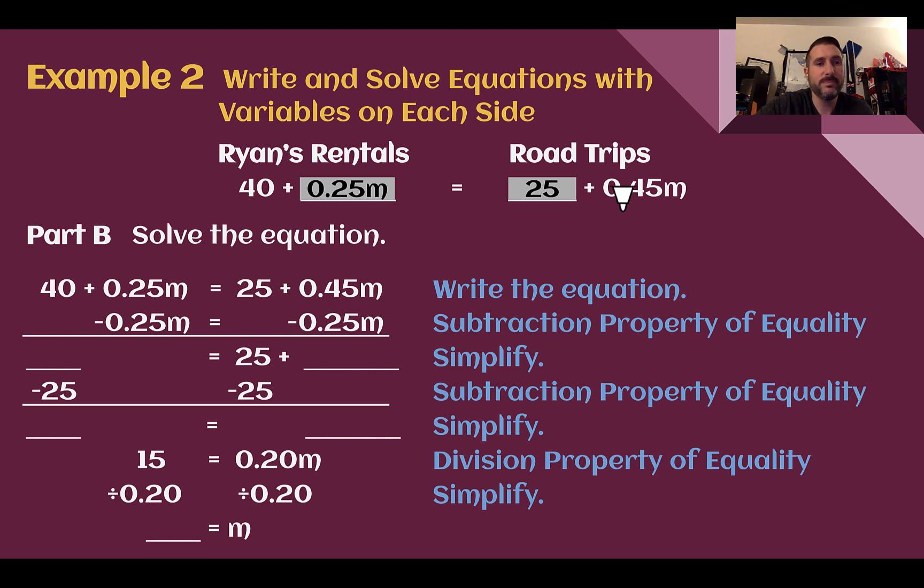Now that we have our equation, we can solve for our variable. So here they're subtracting 0.25 to eliminate it off the left. And then we'd have 0.45M minus 0.25M on the left. So bringing sub down, we got 40. Bring down our 25.